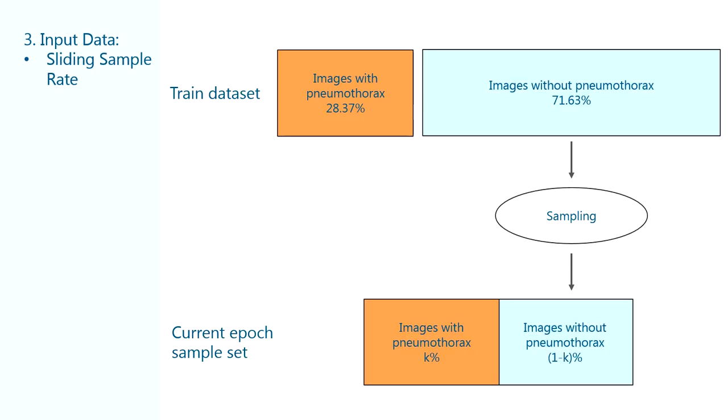Another vital input data manipulation trick is sliding sample rate. In the original dataset the proportion of images with pneumothorax is 28%. But for effective neural network training I need to control this fraction. That's why I take all of the images with pneumothoraxes, but sample only a fraction of the images without pneumothoraxes for training set for each epoch.